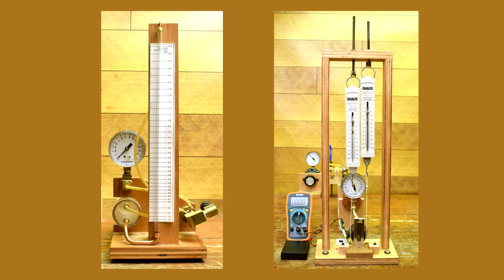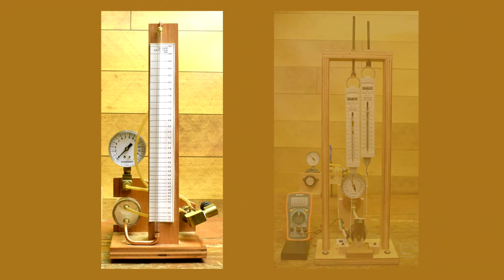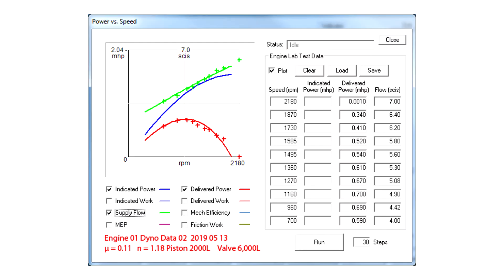Adding a flow meter allowed comparison of both delivered power and air flow rate measurements with simulation predictions, adding a little confidence in the simulation's accuracy.